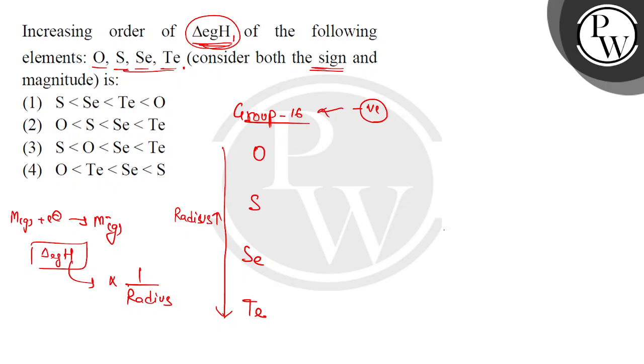We have to consider the sign and magnitude of both. We will show the increasing order - because the negative sign will be there, so we will keep the radius more so the electron gain enthalpy will be less. But what happens is that the sulfur is more than that. In fact, if we talk about the magnitude of the whole group, the oxygen will be less than that. The oxygen is 2s2 2p4 and this is 3s2 3p4. Okay, the size is more.